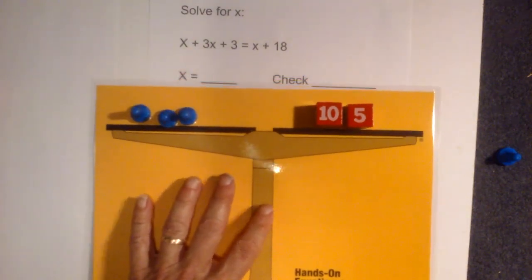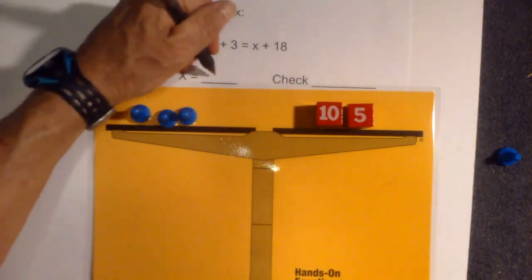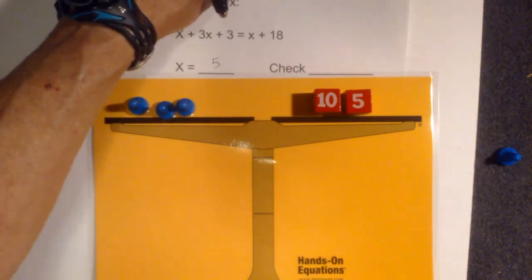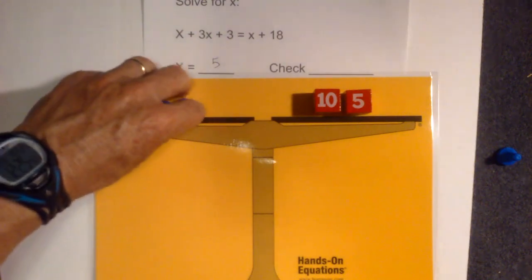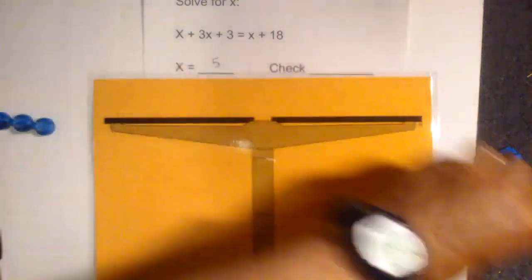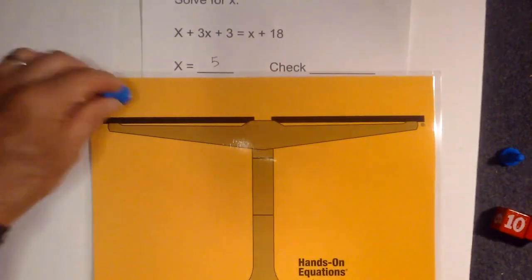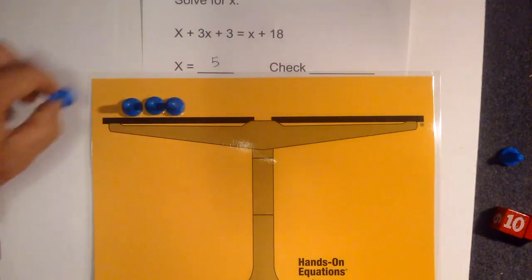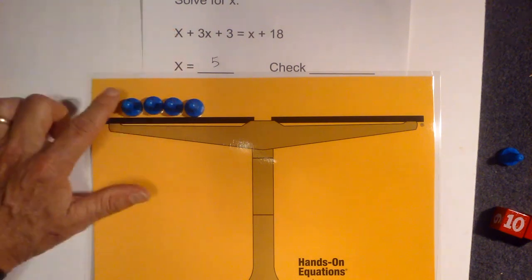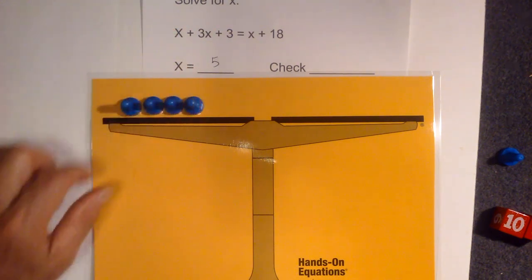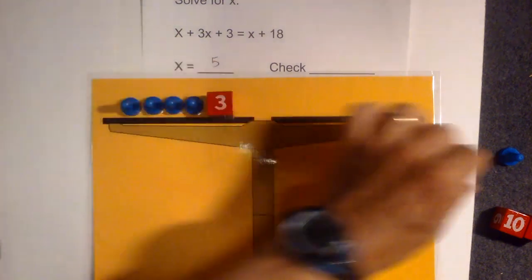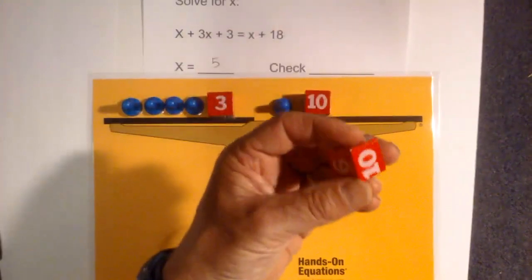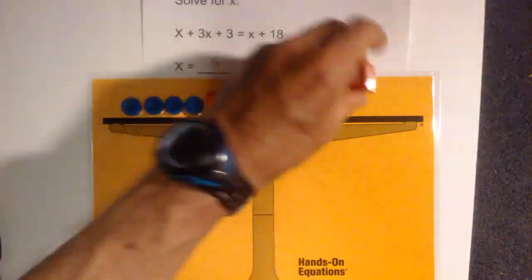I'm going to write my answer as 5, so x is equal to 5. Now what I'm going to do is check my work. I'm going to clear the board and reset. So I have 1, 2, 3, 4 pawns on this side. X is for this one, 3x is for those three, and then I have 3. And then I have x and 18.